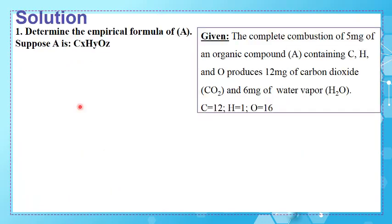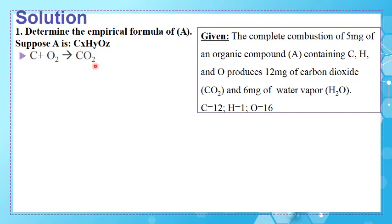Let's start with the first question. We suppose that A has a formula CₓHᵧOᵤ, since compound A contains carbon, hydrogen, and oxygen. The combustion of A produces CO₂ because the carbon in A reacts with oxygen in air. Therefore, the CO₂ produced comes from the carbon contained in A — as much CO₂ as we obtain, we know how much carbon compound A contains.